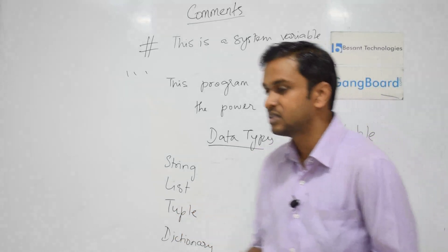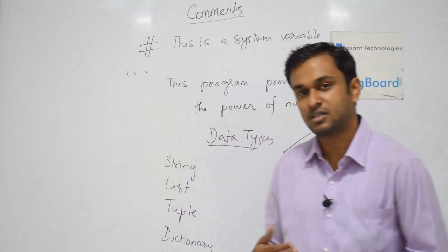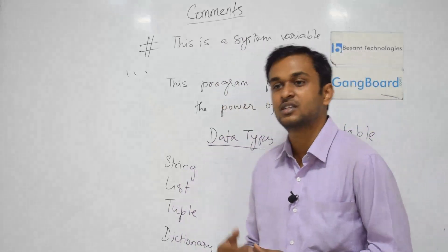We have a list as a collection of items. And then tuple, it is similar to a list, but it is an immutable object.